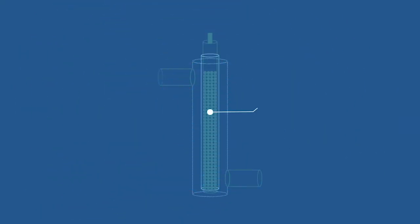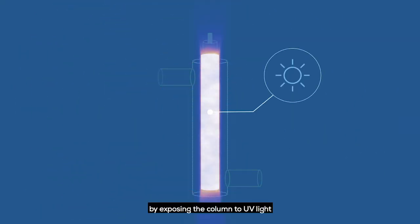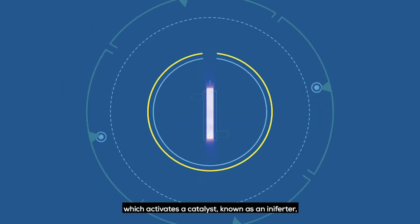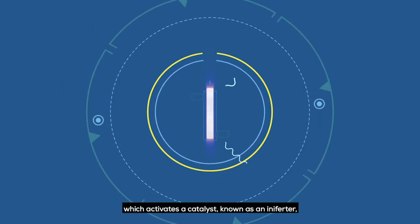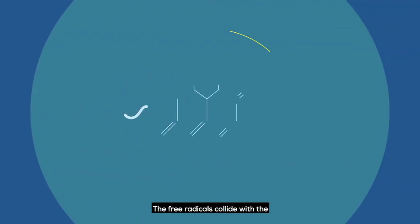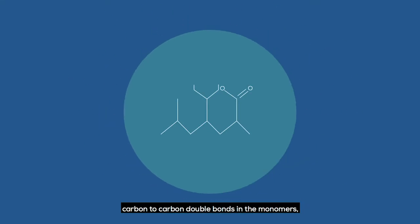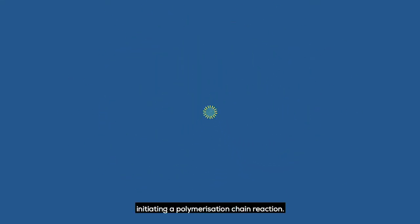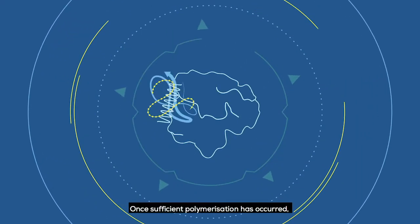By exposing the column to UV light, which activates a catalyst known as an iniferta, which generates free radicals. The free radicals collide with the carbon-carbon double bonds in the monomers, initiating a polymerization chain reaction.